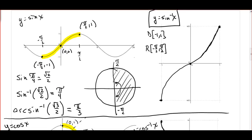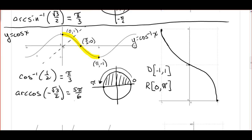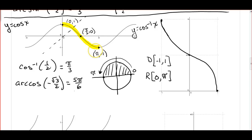We went on to talk about the inverses for sine x, where we restricted the domain to negative pi over 2 to positive pi over 2. And the inverse for cosine, where we restricted the domain to 0 to pi, so that when we reflect over the line y equals x, we still have a function.